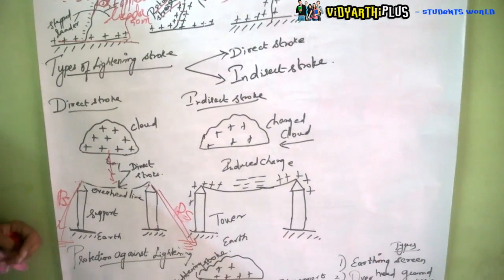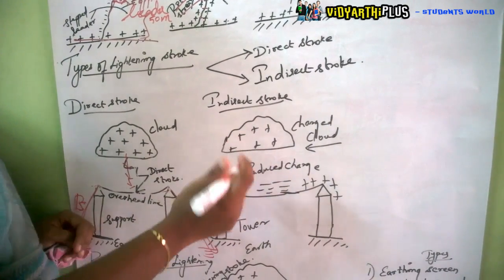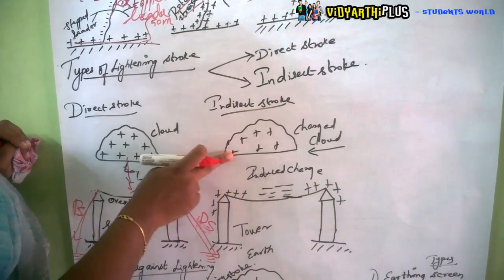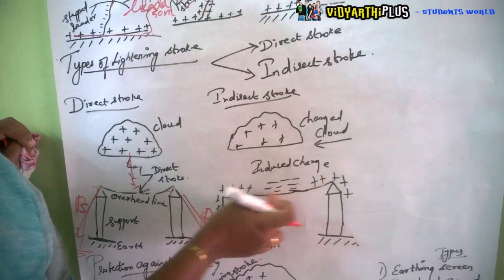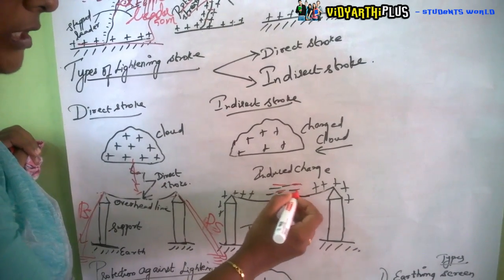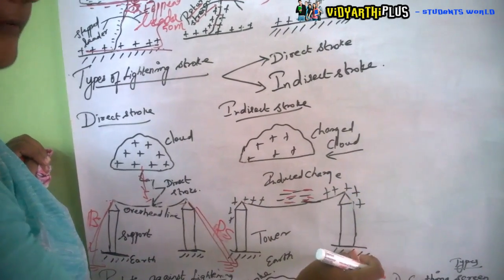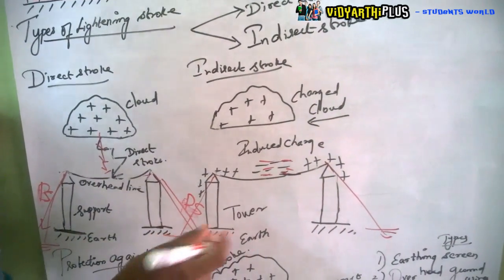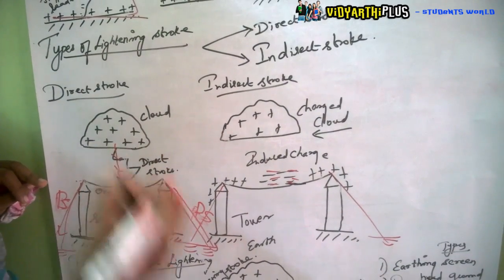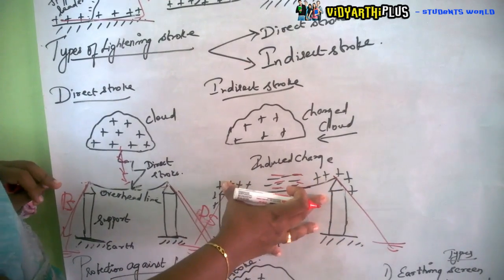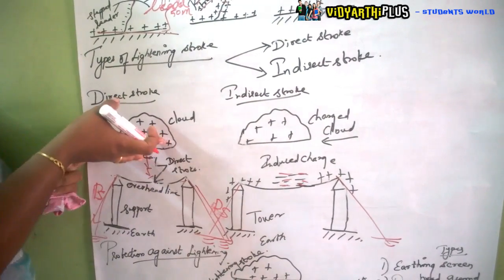In an indirect stroke, the lightning does not strike directly; instead, induced charges appear on the line. If the cloud is positively charged, a negative charge gets induced in the transmission line, while positive charges flow through the towers to the ground. Compared to the direct stroke, the charge intensity is lower, but indirect strokes still cause significant damage to the transmission line and connected components.